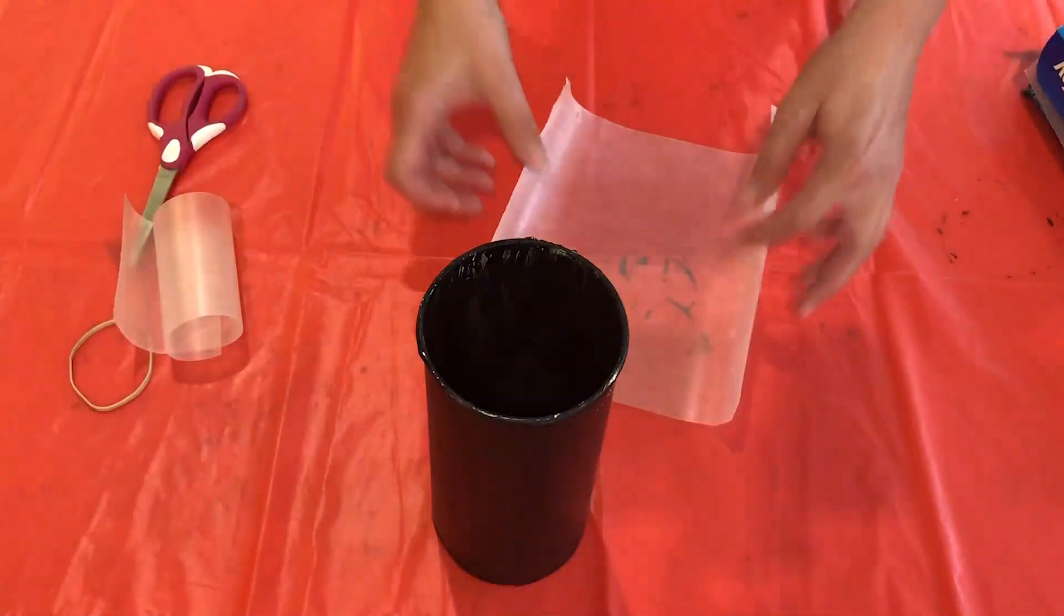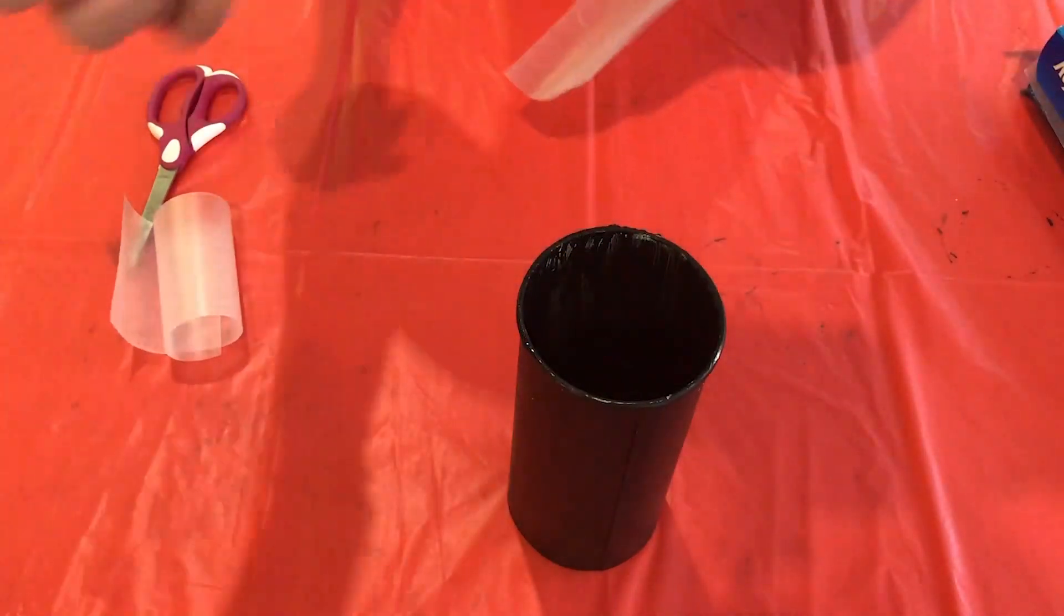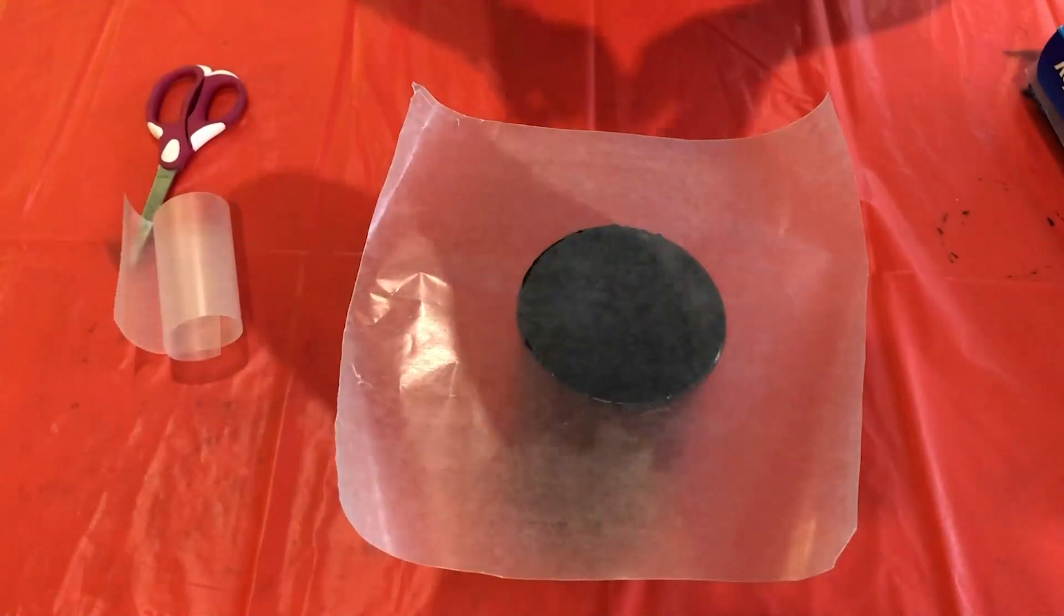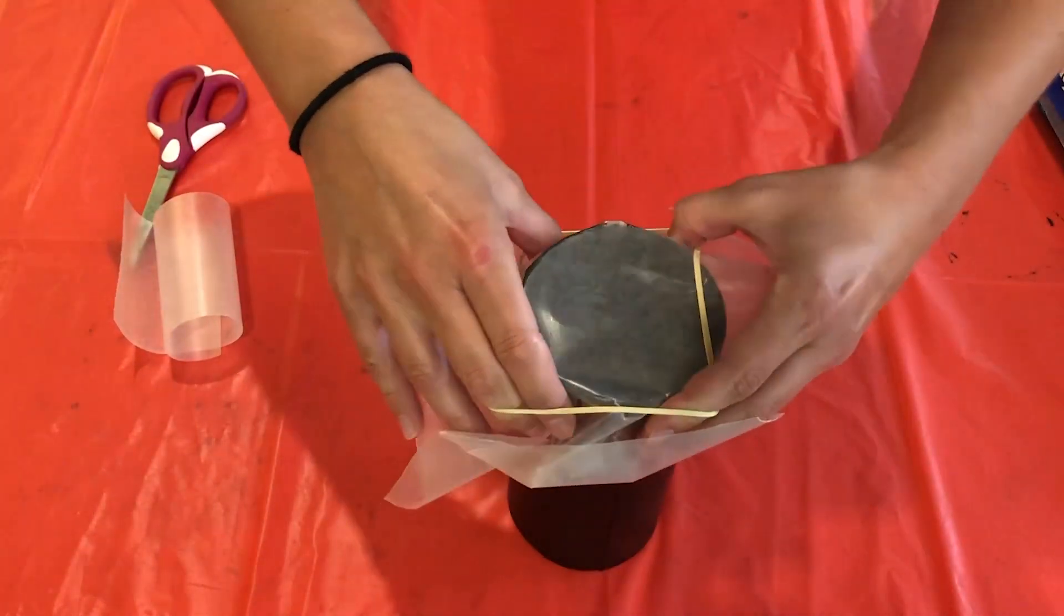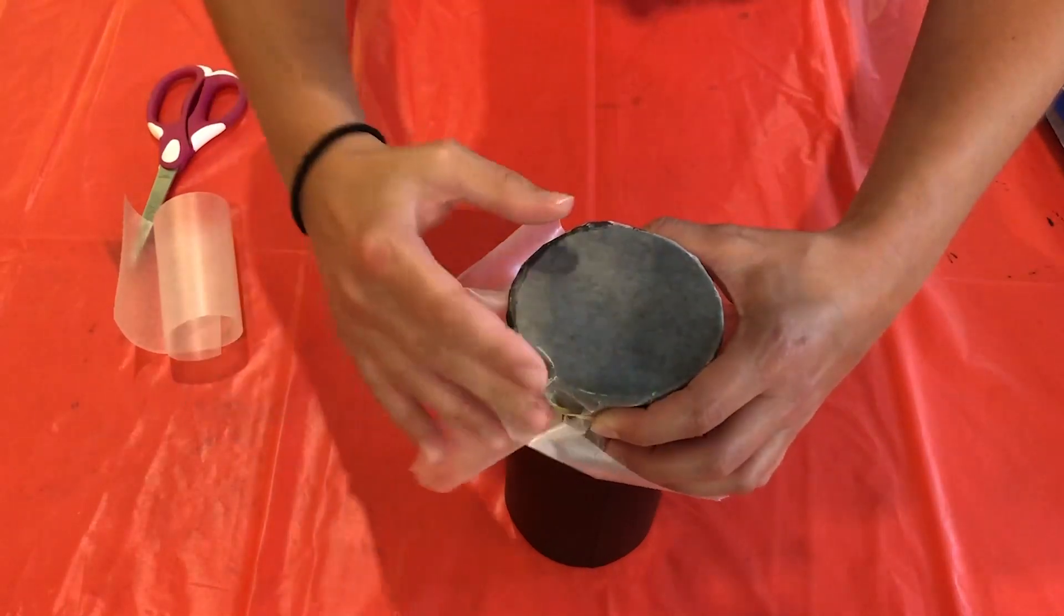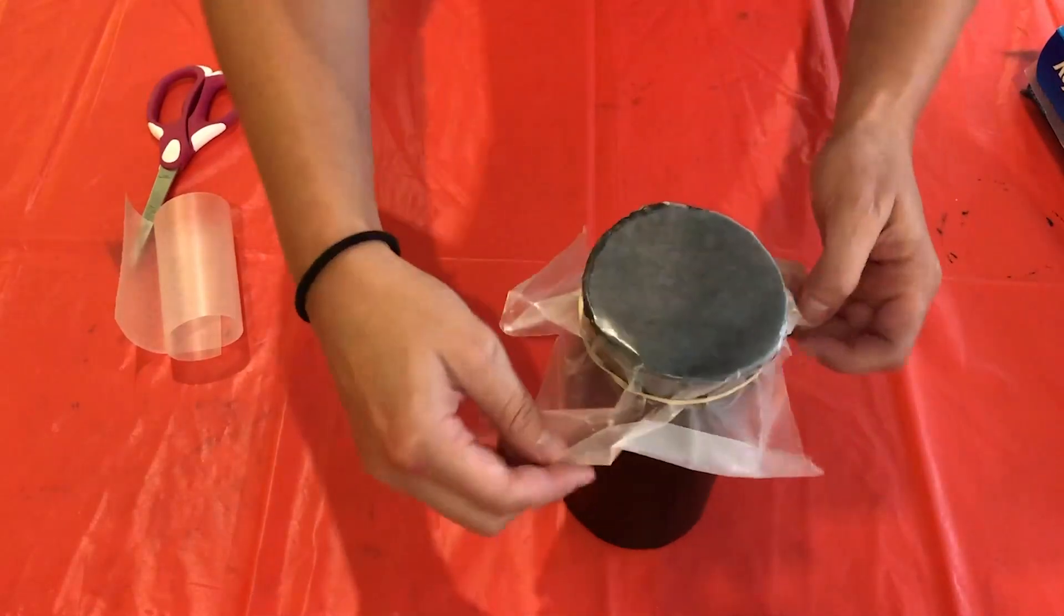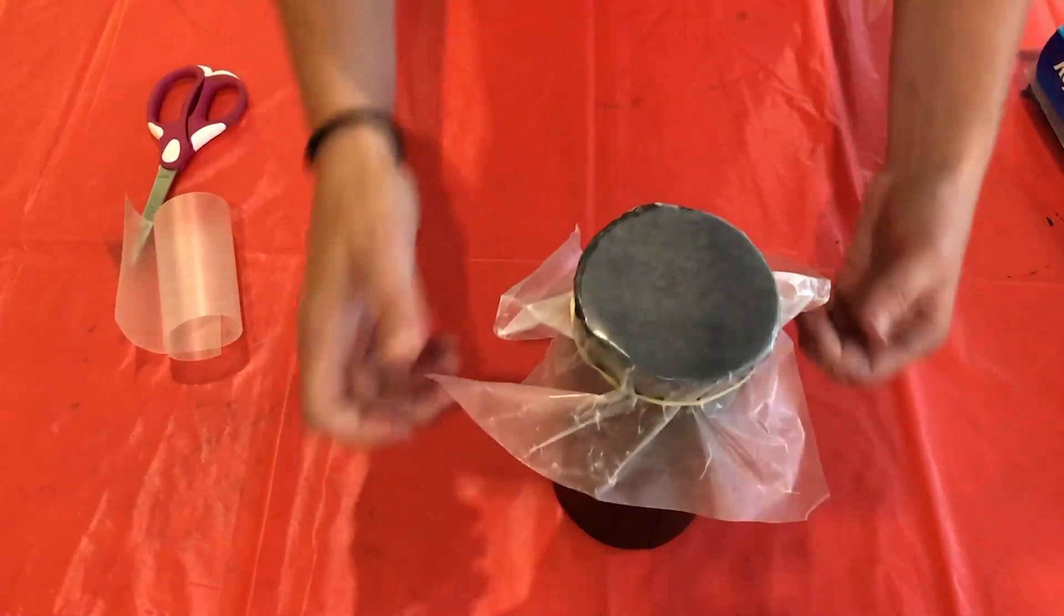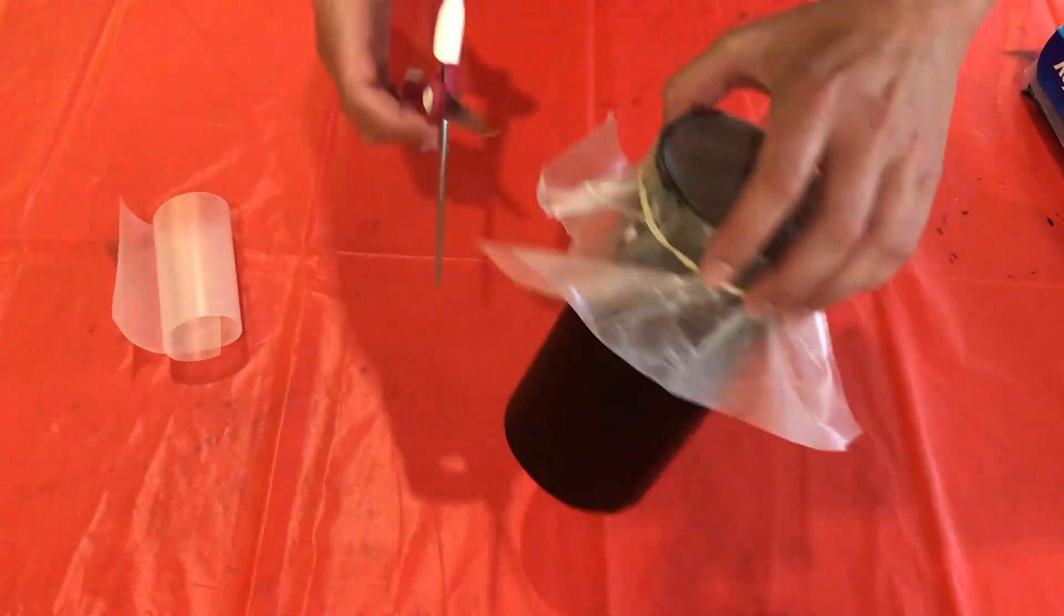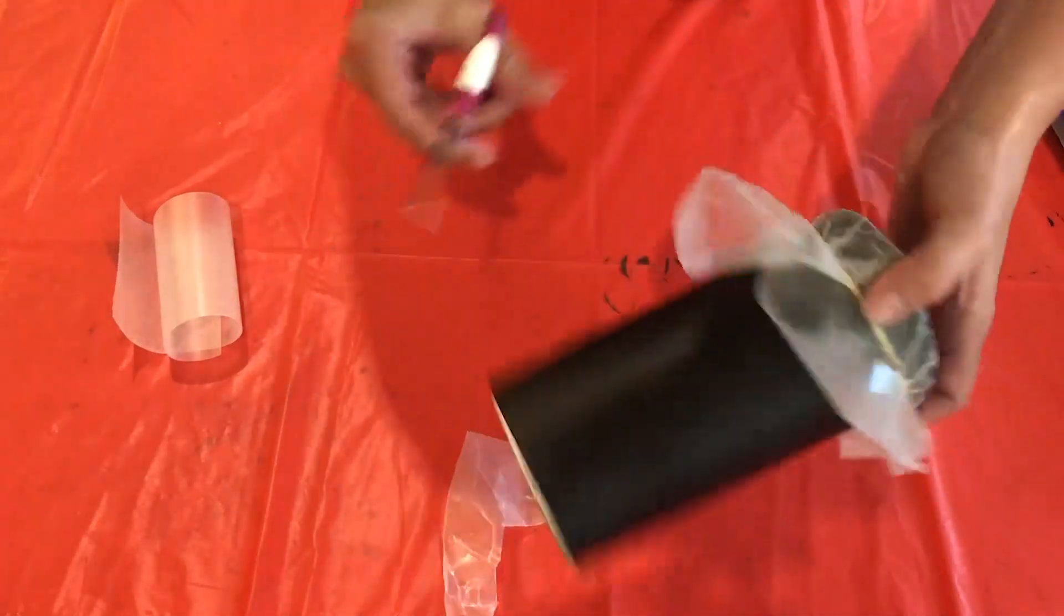All right, so now what you're going to do is you're going to take the wax paper. I'm going to use a rubber band to hold this on here. Okay, so once you have this on here, you can go ahead and just cut off some of this excess paper here.